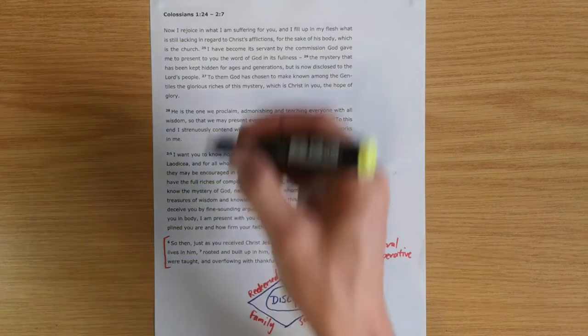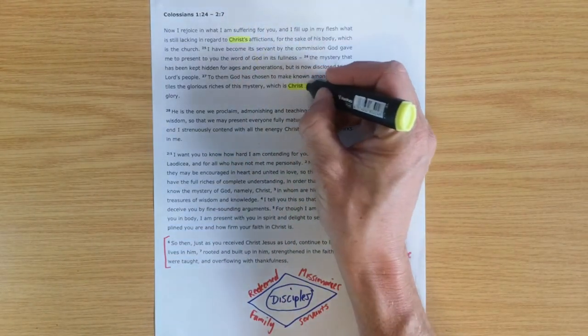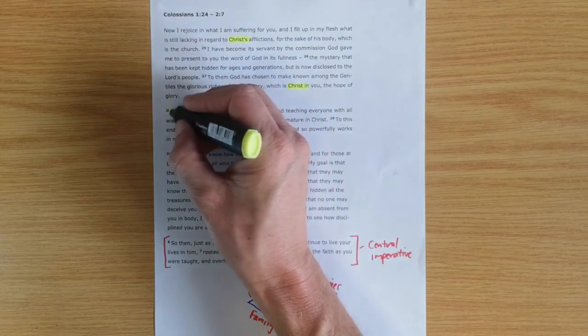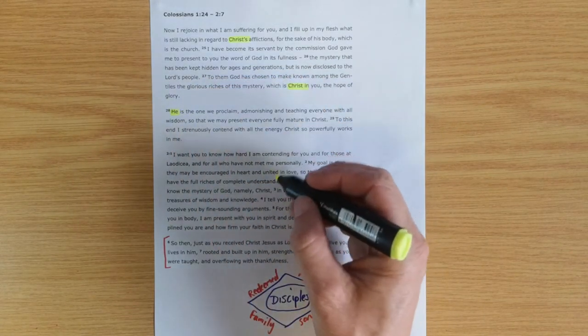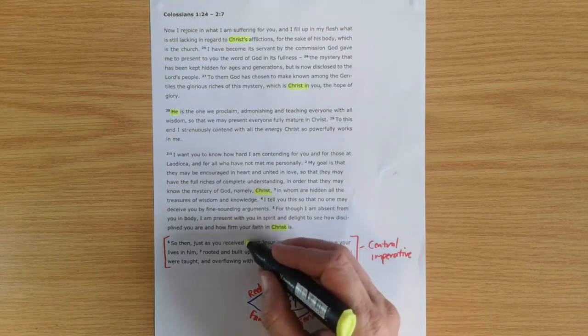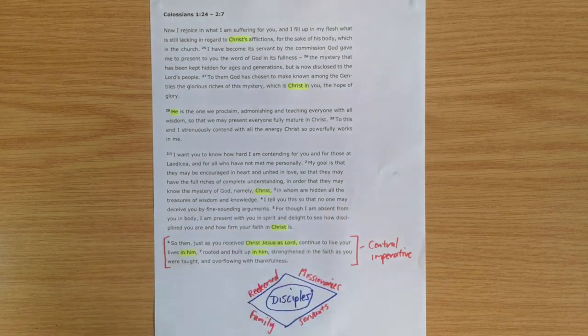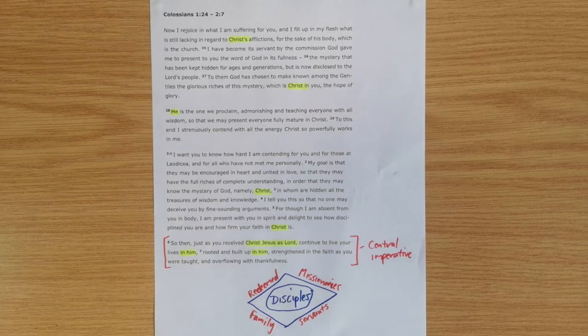A massive focus in Colossians is on the supremacy of Christ. We see how Paul puts the spotlight on Christ throughout the letter, and particularly in this section how we see Jesus Christ as Lord is the one who Paul wants us to look at, remember, and continue in.